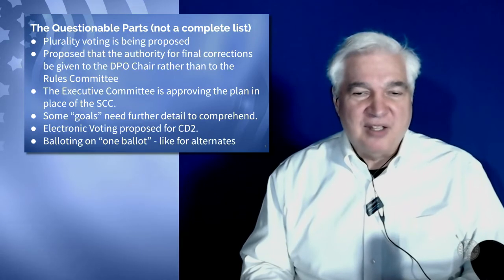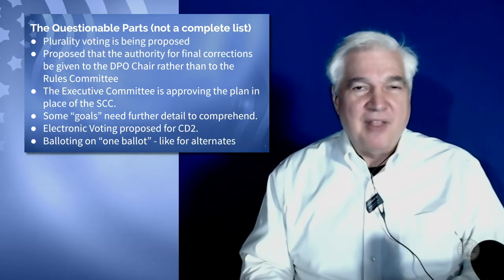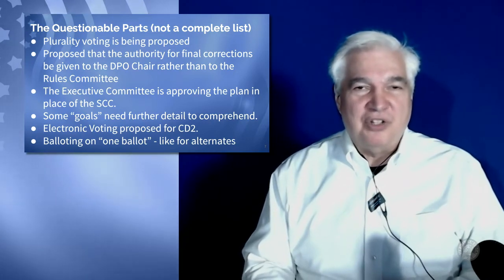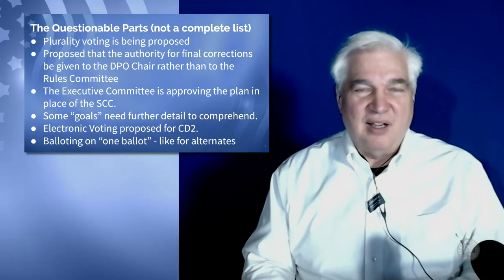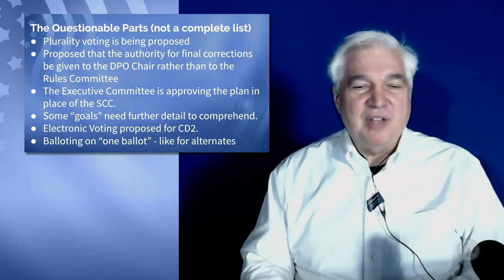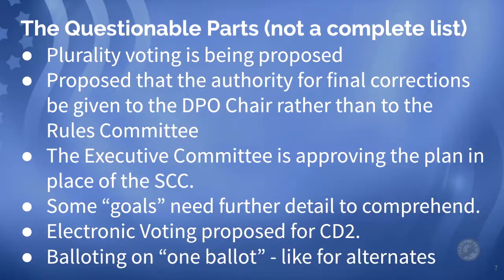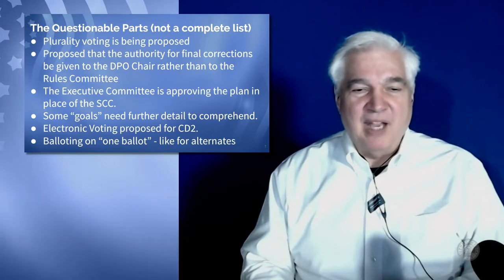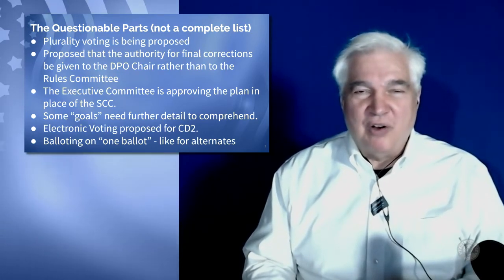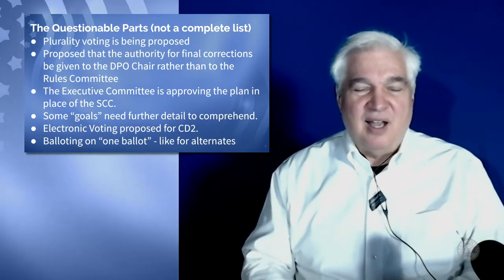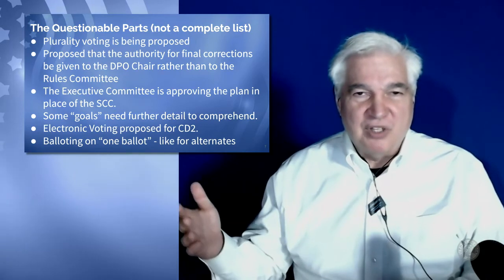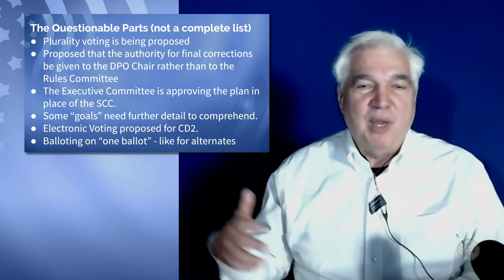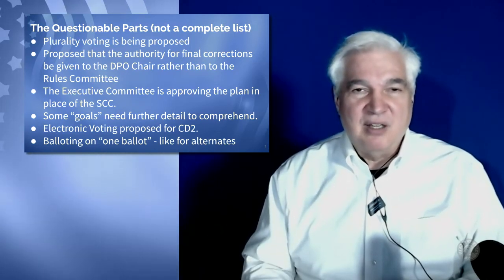The questionable parts — and this is not a complete list — include numerous places where the plan talks about plurality voting. That is not a thing. We cannot do plurality voting unless the state central committee allows for it in the bylaws. And even if it didn't have to be in the bylaws, it would require a two-thirds vote because this violates one of the fundamental rules of parliamentary procedure, which is majority rule. It's possible for people to win via plurality voting without getting 50% of the votes.